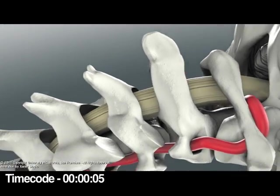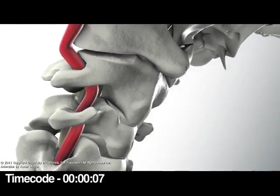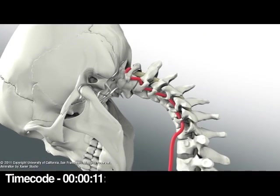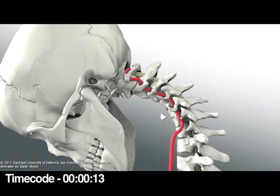The patient is positioned prone onto jelly rolls and the head is secured in Mayfield pins. An incision is made from the C2 to T4 level. A standard posterior cervical midline exposure is performed.